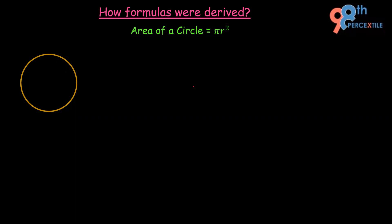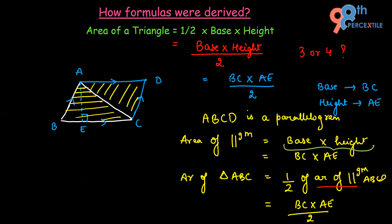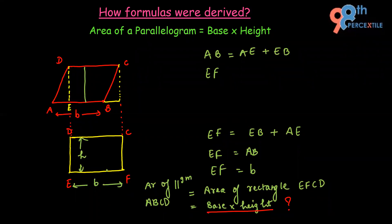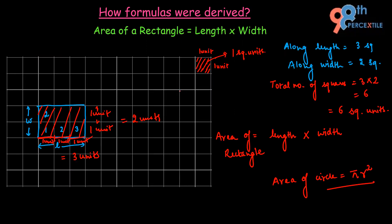Hello students! Welcome back to our series on how formulas were derived. In this video we will see how the area of a circle is pi times the square of the radius. If you haven't watched the previous videos of this series — where I talk about how the area of rectangle, parallelogram, and triangle are derived — I would recommend watching those first, because this video on area of a circle has a connection with the previous video on area of a rectangle.